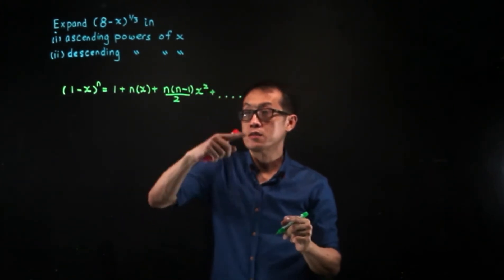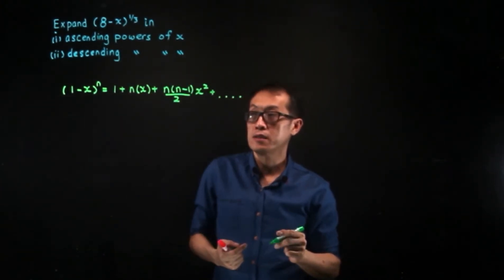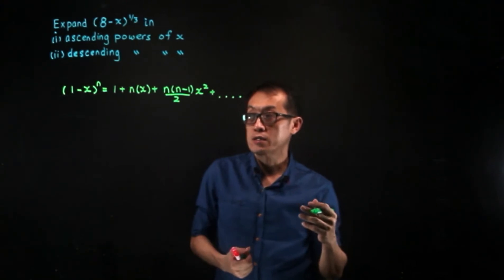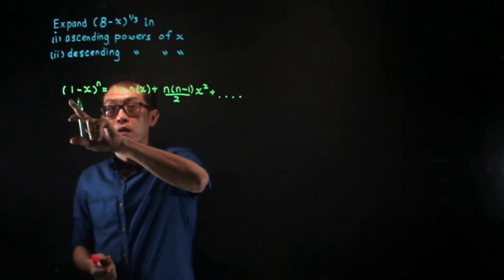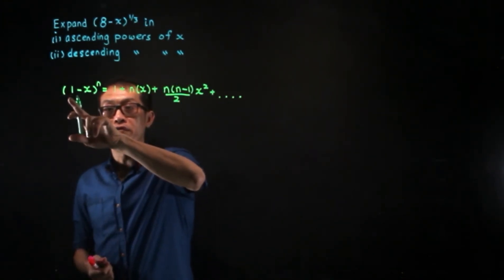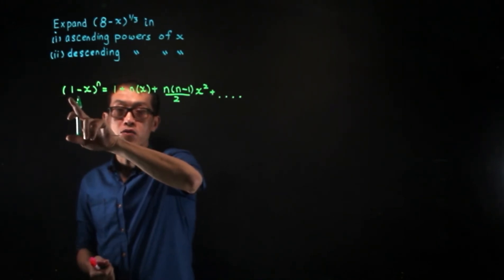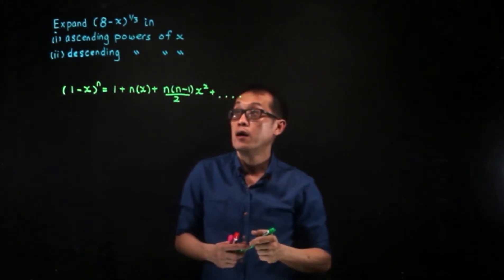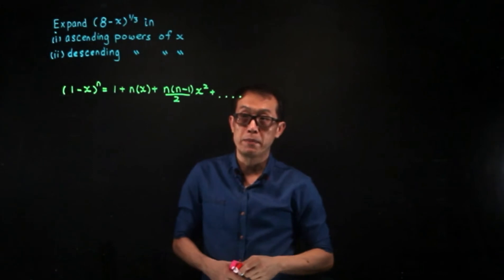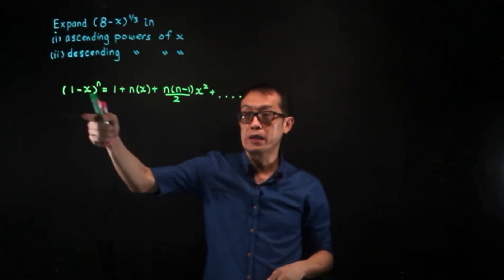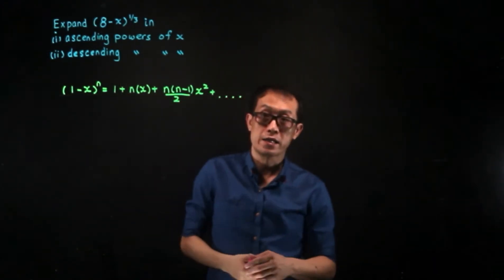To make use of this standard expansion, the key thing to note is that your coefficient must be 1. This leading coefficient has to be 1. So instead of using the binomial formula directly, we normally make use of this standard expansion.